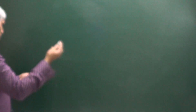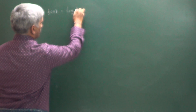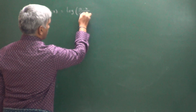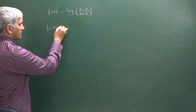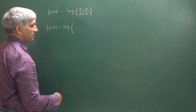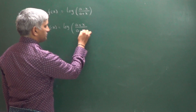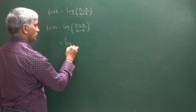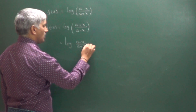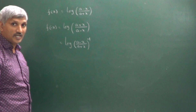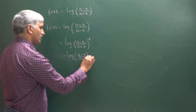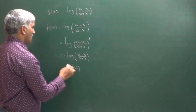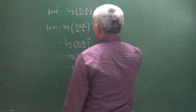First question: f of x equal to logarithm of a minus x divided by a plus x. Find f of minus x: f of minus x equals log of a plus x divided by a minus x, which equals log of a minus x over a plus x to the power of minus 1. The minus 1 comes forward, giving minus log of a minus x over a plus x, which is minus f of x. So f of minus x equals minus f of x — this function is an odd function.